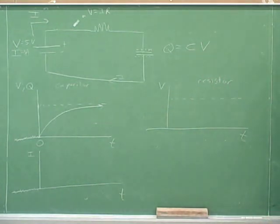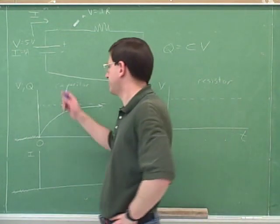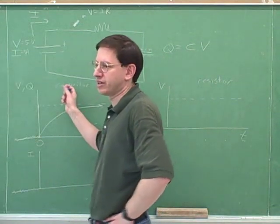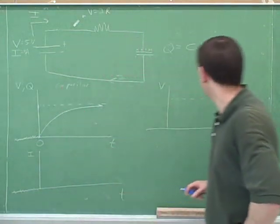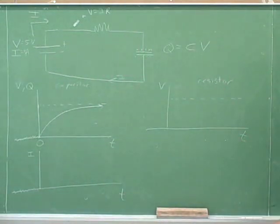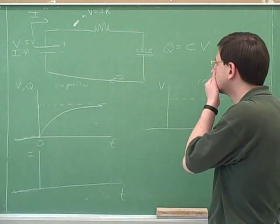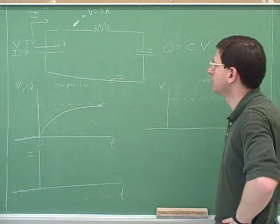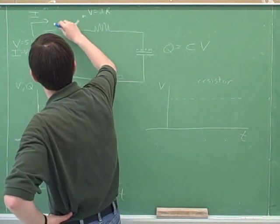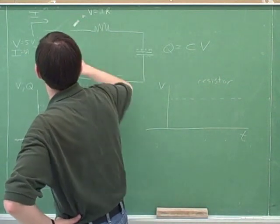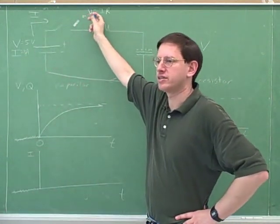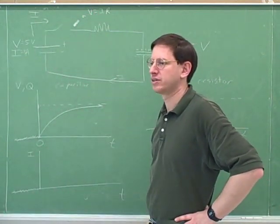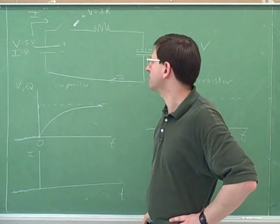Unfortunately, we're going to need another graph. This was the graph for the voltage across the capacitor, but we also need to think about what the voltage across the resistor is going to look like. We're going to use V = IR to figure that out, at least sometimes.